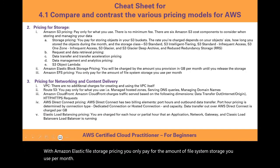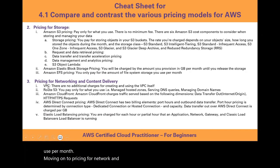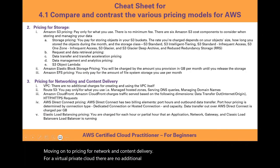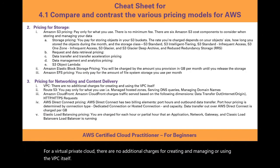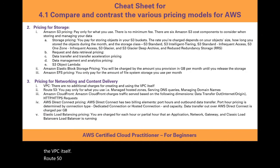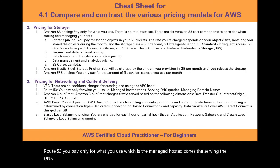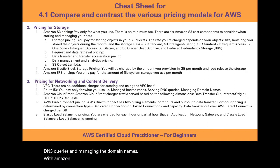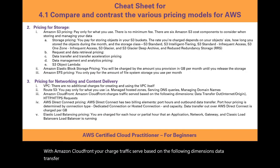For network and content delivery pricing: with a Virtual Private Cloud (VPC), there are no additional charges for creating, managing, or using the VPC itself. With Route 53, you pay only for what you use — managed hosted zones, DNS query serving, and domain name management. With Amazon CloudFront, you are charged based on data transfer out and HTTP or HTTPS requests.